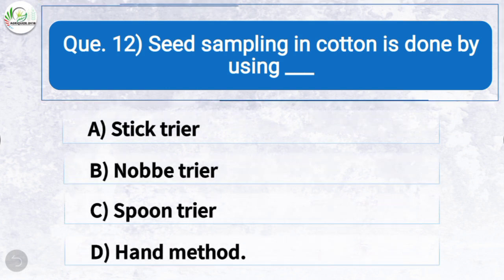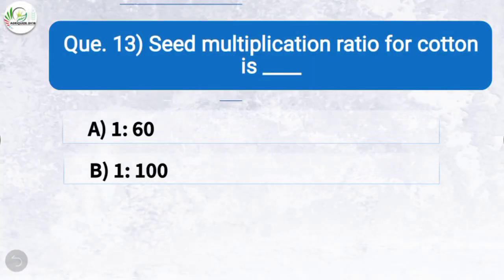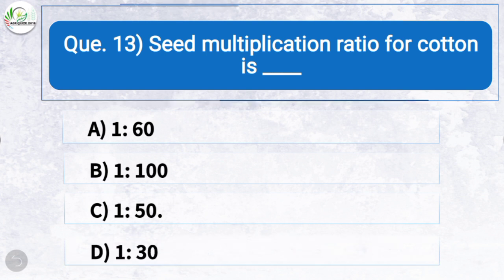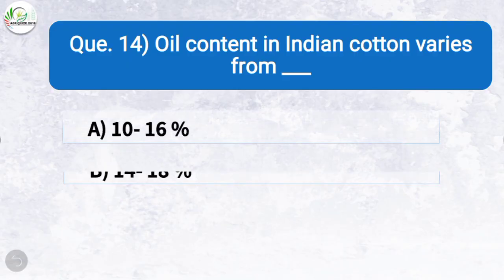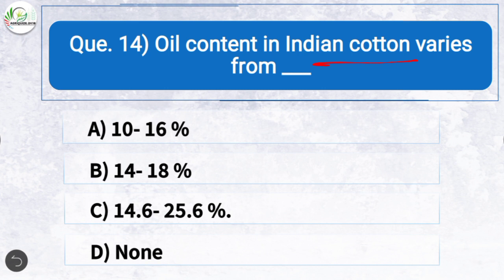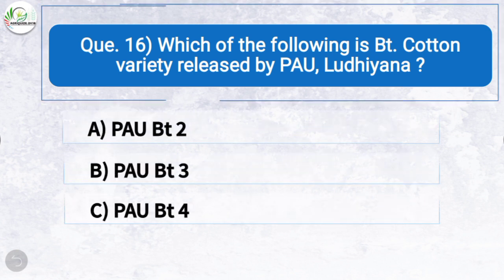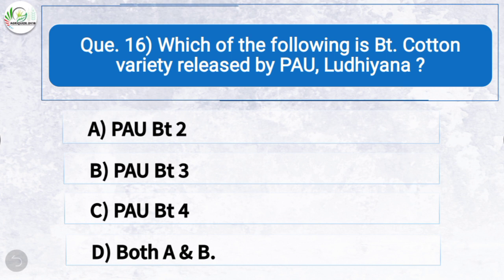Question twelve: Seed sampling in cotton is done by using — the correct answer is option D: hand method. Question thirteen: Seed multiplication ratio for cotton is — the correct answer is option C: 1:50. Question fourteen: Oil content in Indian cotton varies from — the correct answer is option C: 14.6 to 25.6 percent. Question sixteen: Which of the following is a BT cotton variety released by Punjab Agricultural University (Ludhiana)? The correct answer is option D: both PAUBT2 and PAUBT3.